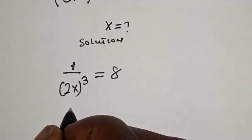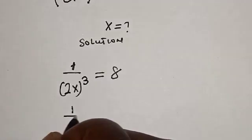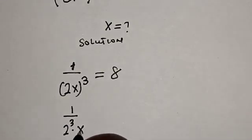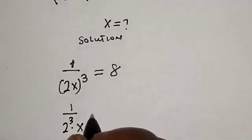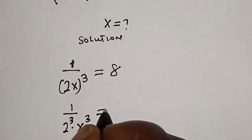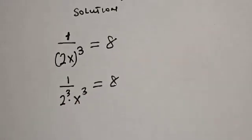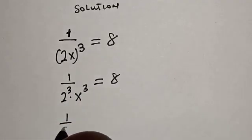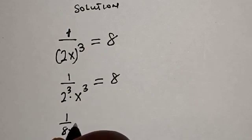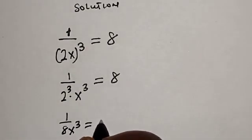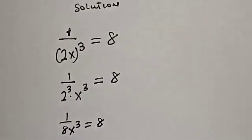And this is 1 over 2 raised to the power of 3 multiplied by x raised to the power of 3 is equal to 8. Then this is 1 over 8x raised to the power of 3 is equal to 8.